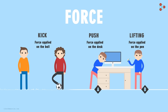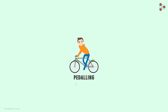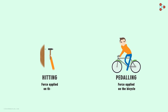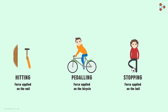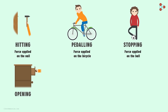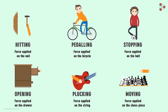There are many such actions that we can perform. While riding a bicycle, we pedal it continuously to keep it in motion — pedalling is the force we apply on a bicycle. Hitting a hammer on a nail is also a force applied on the nail. Even stopping a moving ball means we are applying a force on it. Opening a drawer, plucking the string of a guitar, moving a piece on a chess board are some other actions performed on objects. Performing these actions on objects is nothing but applying force on them.